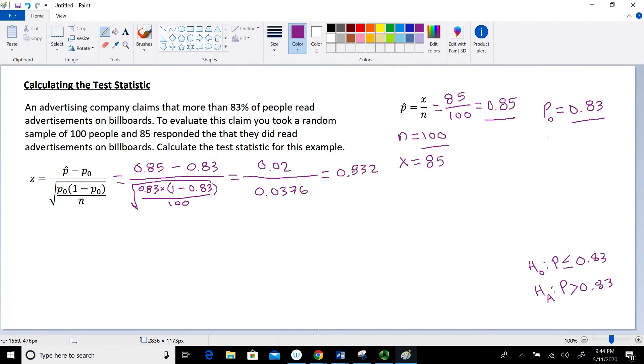Okay, now the test statistic really doesn't tell us much about whether we're going to reject or fail to reject our null hypothesis. We have to calculate what the P value is. And in a later video, I'm going to use the same example. And we'll use that test statistic and the hypothesis statement in order to calculate the P value. For right now, I just wanted to focus on calculating the test statistic.